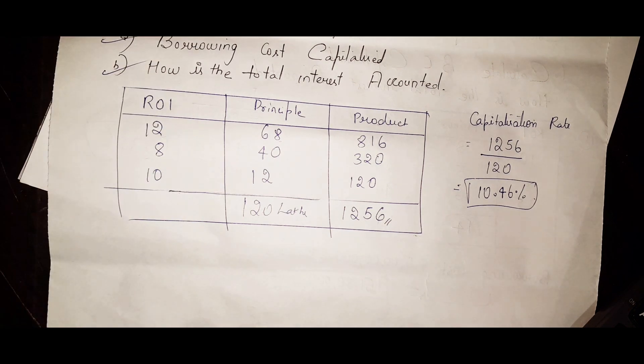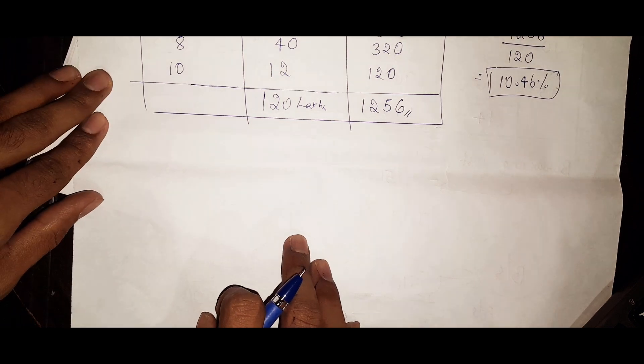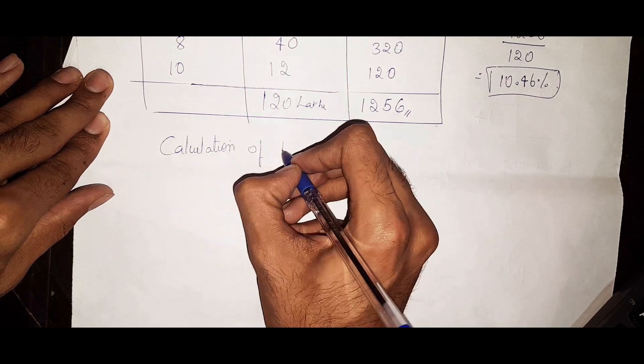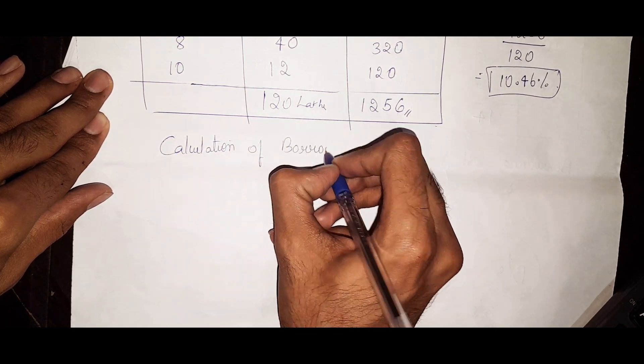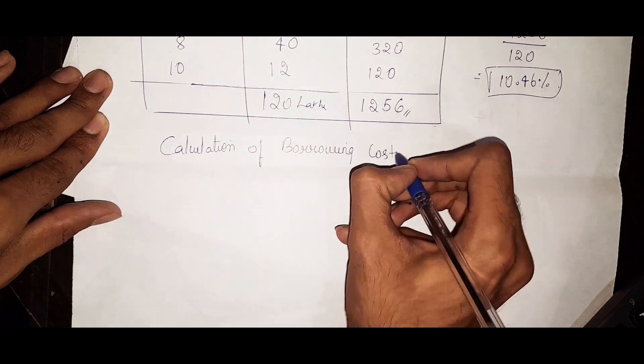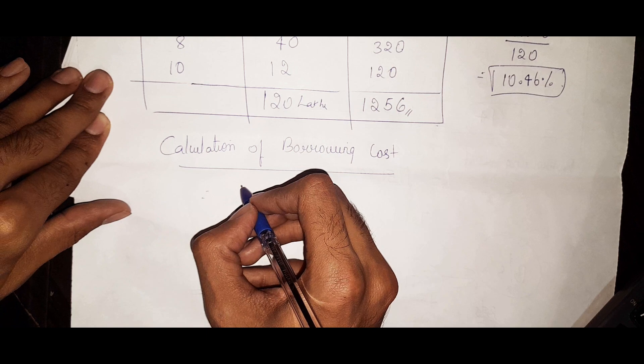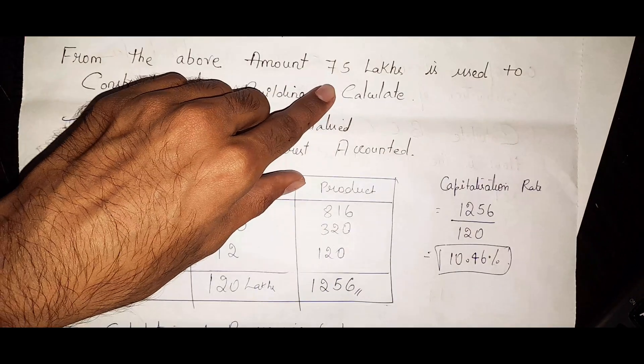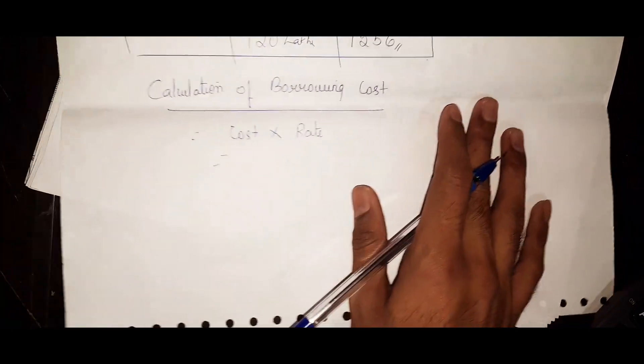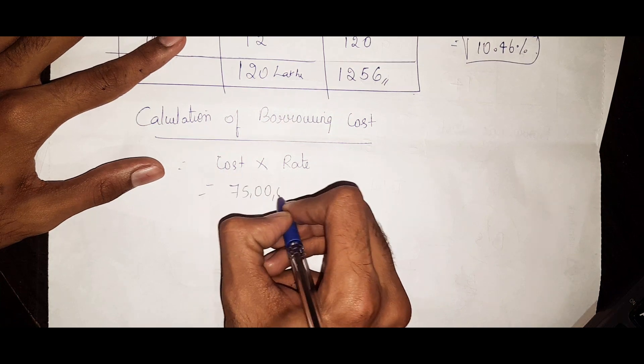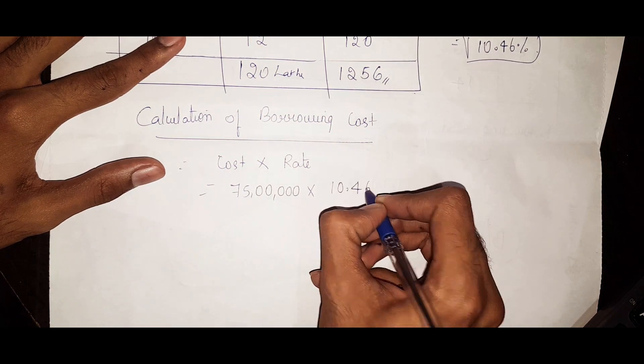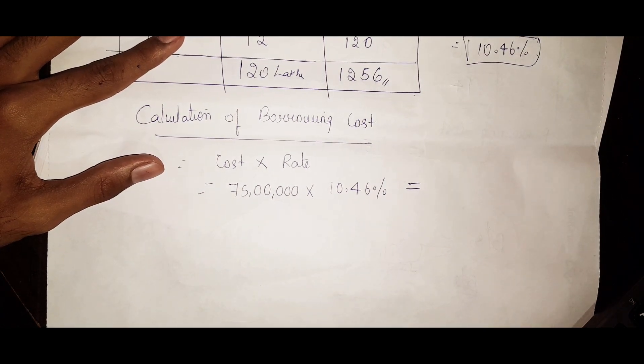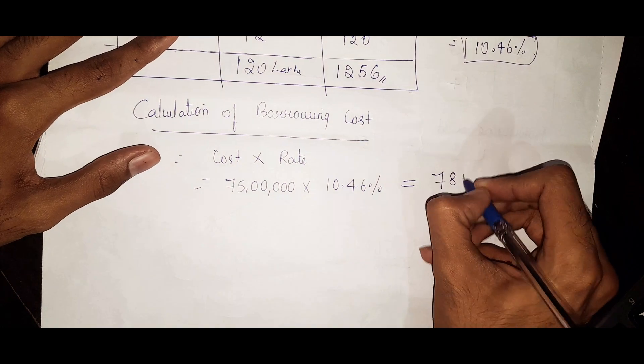Moving forward, we need to calculate the borrowing cost. Calculation of borrowing cost is very simple: cost into rate. What is the cost? Cost is 75 lakhs, 75 lakhs into 10.46. It would be 7 lakh 84 thousand 500.